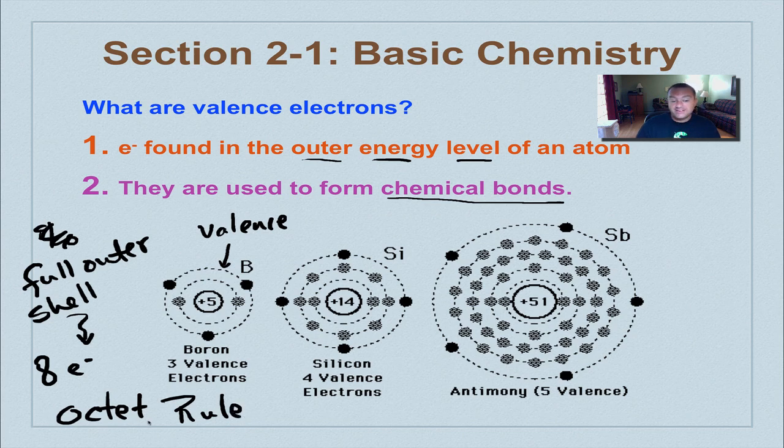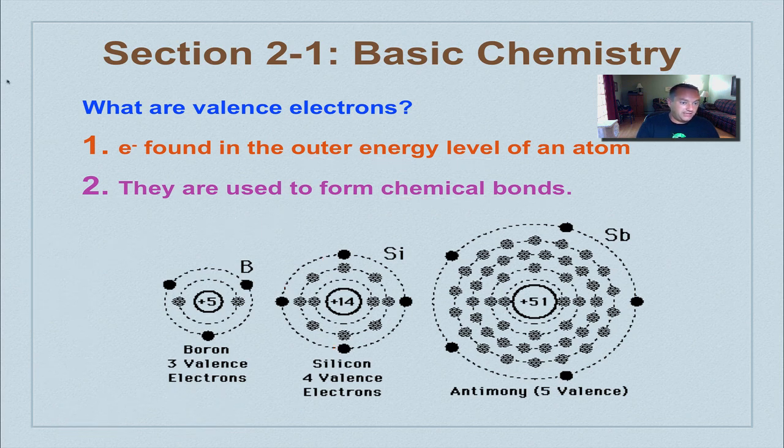So let's go back here to silicon: one, two, three, four. It can bond with four different atoms with the goal of reaching eight. So if it bonded with an atom and it gained one here, gained one there, gained one here—one, two, three, four, five, six, seven, eight—that atom would be happy because it satisfied the octet rule. So let's see the octet rule in action.